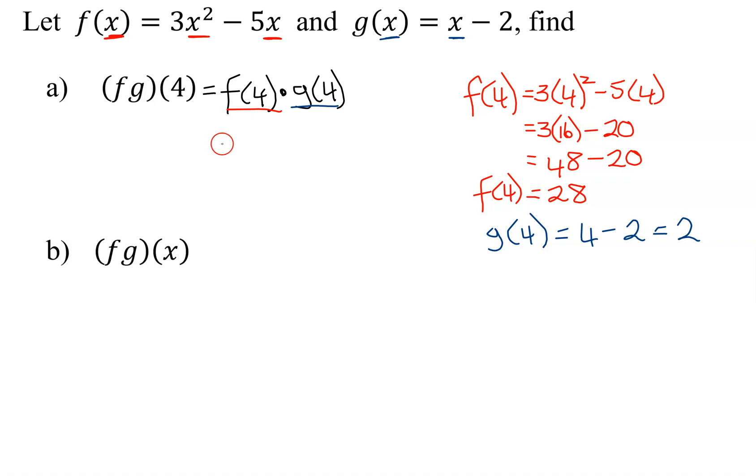So now f times g of 4 is just f(4), which was 28, times g(4), which is 2. Which equals 28 times 2 is 56. So the product function f times g of 4 is equal to 56.